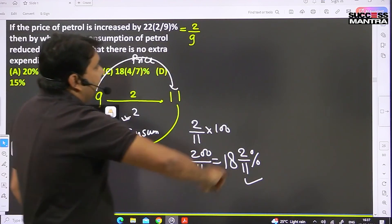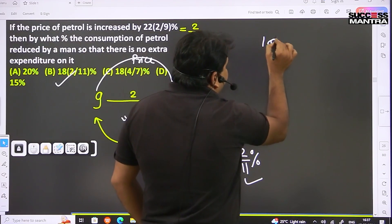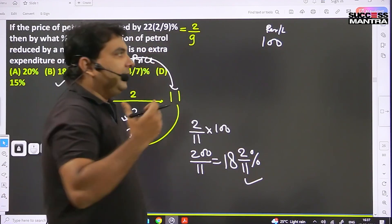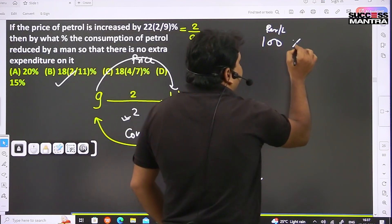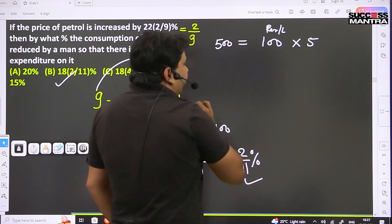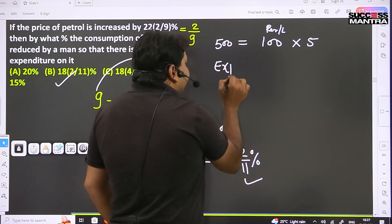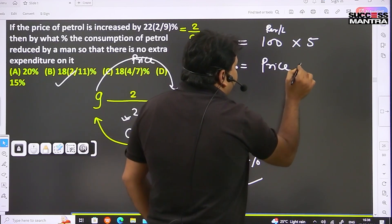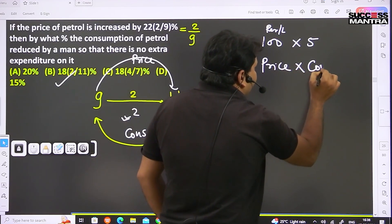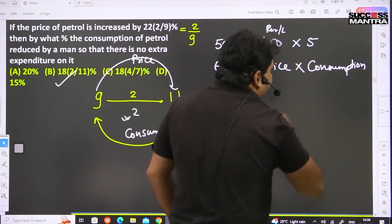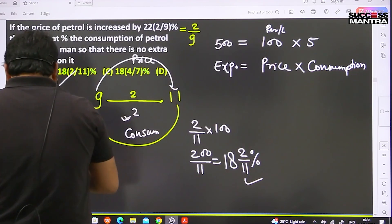If I take 100 rupees per liter, per liter, and I fill 5 liters of petrol, then my cost will be 500. So the formula is: your expenditure equals price times consumption. Price times consumption. Clear?